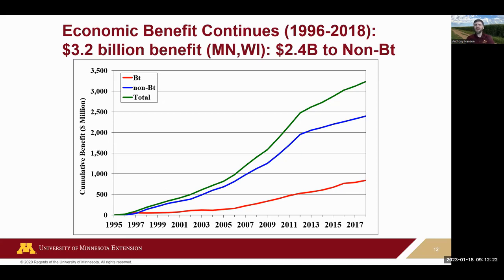Bruce and Bill Hutchison put together a graph showing the economic benefit of BT crops. Obviously there's a benefit to growing BT corn, but those growing non-BT corn also get a benefit through corn borer population suppression. If you're in a case where you could grow non-BT, it's cheaper, and you may come out ahead — though keep in mind you may not be dealing with the highest-yielding varieties. Growing non-BT may also help reduce the incidence of resistance to these traits.